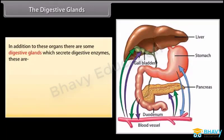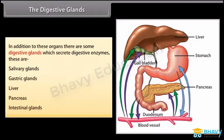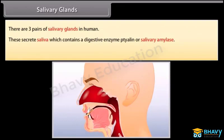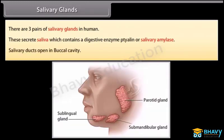In addition to these organs, there are some digestive glands which secrete digestive enzymes. These are salivary glands, gastric glands, liver, pancreas, and intestinal glands. There are 3 pairs of salivary glands in humans. These secrete saliva which contains a digestive enzyme called salivary amylase. Salivary ducts open in the buccal cavity.